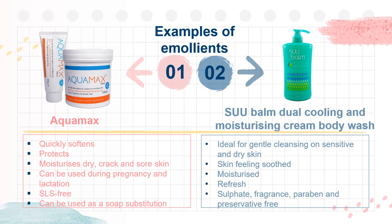Emollients are readily available and can be purchased from supermarkets and pharmacies. A few examples available in Brunei: 1. Aquamax — it quickly softens, protects, and moisturizes dry, cracked, sore skin. It can be used during pregnancy and lactation. It is free from sodium lauryl sulfate and can be used as a soap substitute.